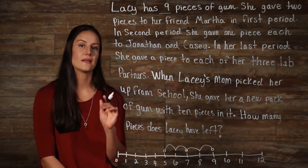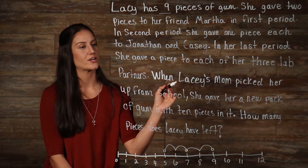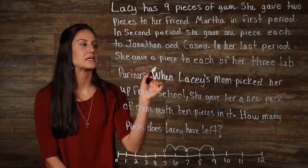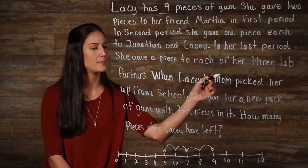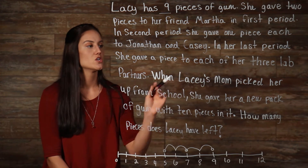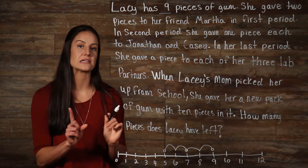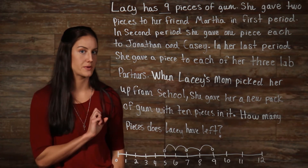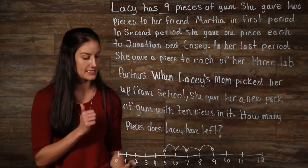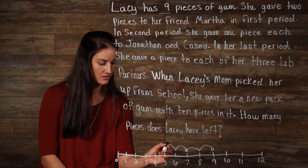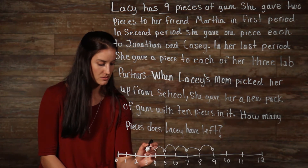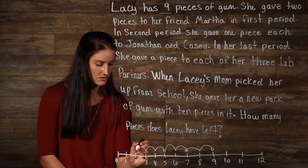And then in her last period she gave a piece to each of her three lab partners — so she gave one piece to three different people. That's minus three pieces of gum, so we go to the left three spots. That puts us at two.